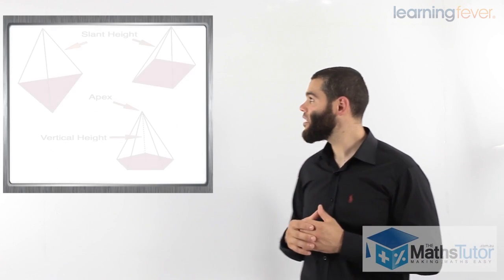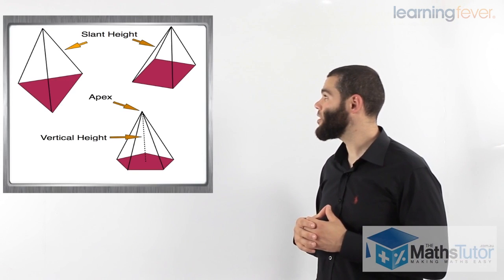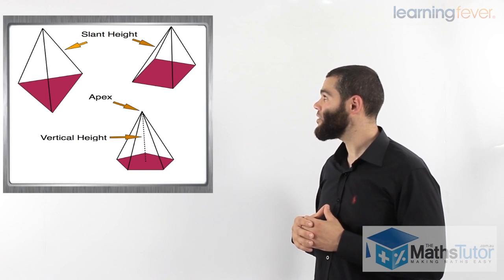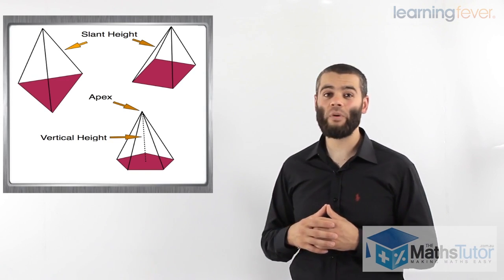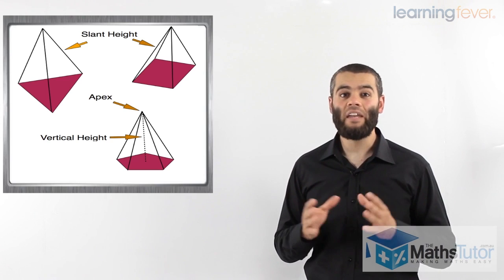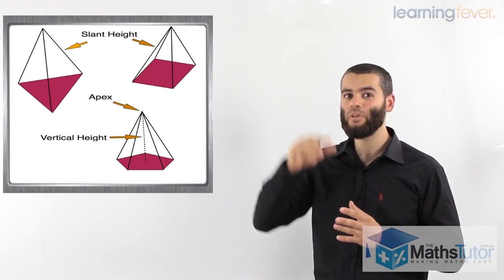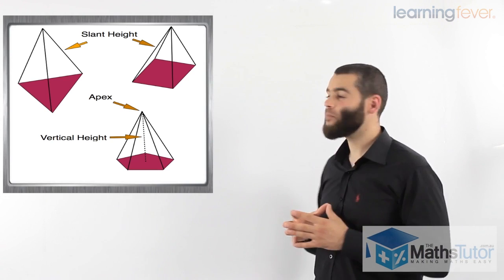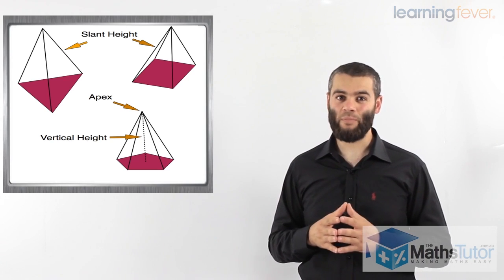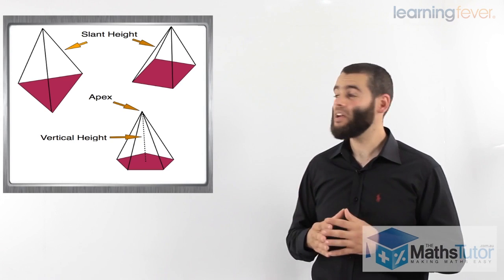Then we have the pyramids. Now, the pyramids are very special in the sense that they have what we call an apex. An apex is the pinnacle, it is the top, it is that sharp top bit on top of the pyramid we call the apex. All pyramids have to have an apex.